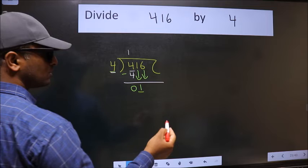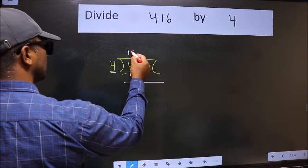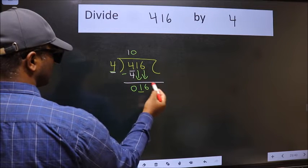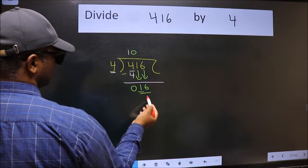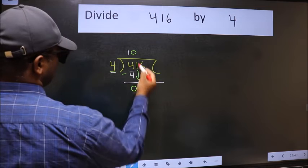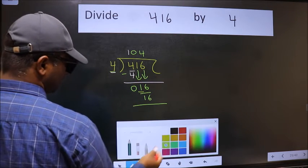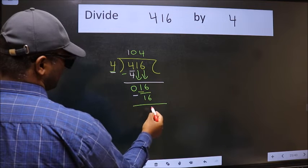The rule for bringing down the second number is we should put 0 here. Then only we can bring down this number. Now 16. When do we get 16 in the 4 table? 4 times 4 is 16. Now we should subtract. We get 0.